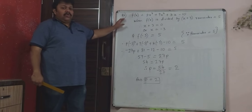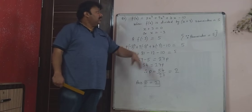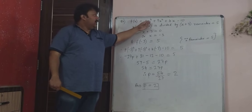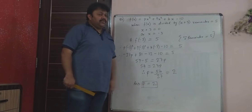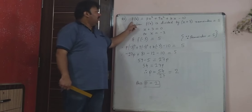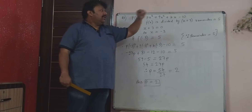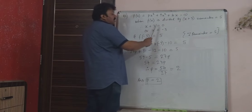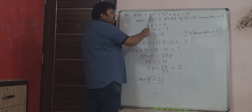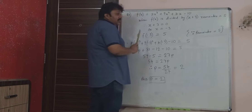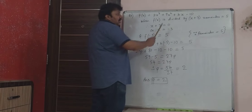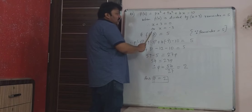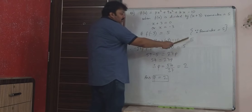Now question number 4. They have given a polynomial with an unknown variable p. They have also given that when this polynomial is divided by x + 3, the remainder is 5. We have to use that statement: x + 3 = 0 means x = -3, and when you substitute x = -3 the remainder is 5. It is not a factor — it is not giving remainder 0.